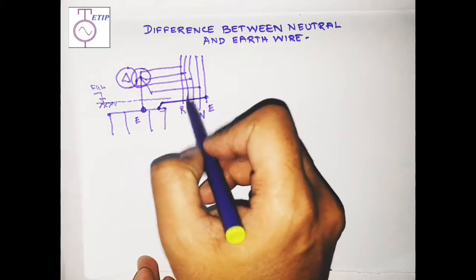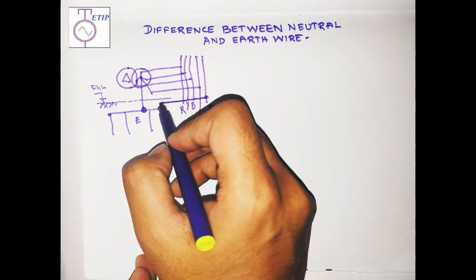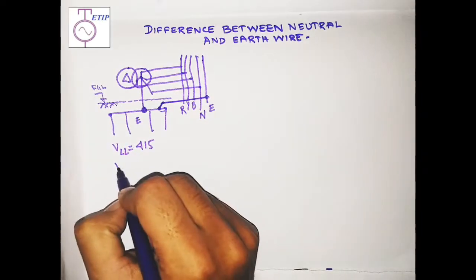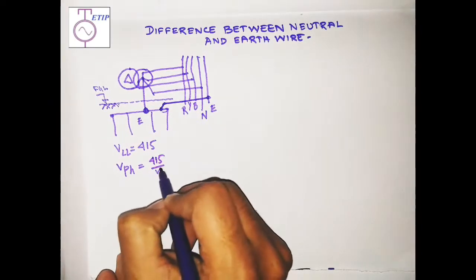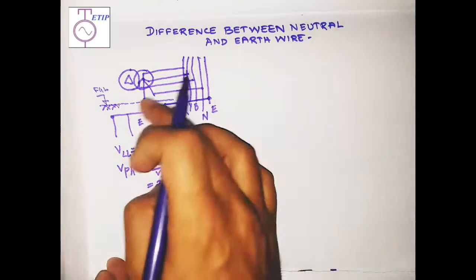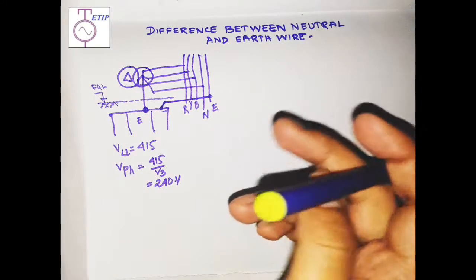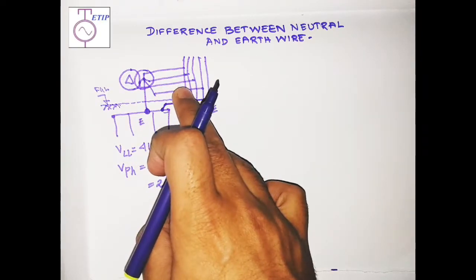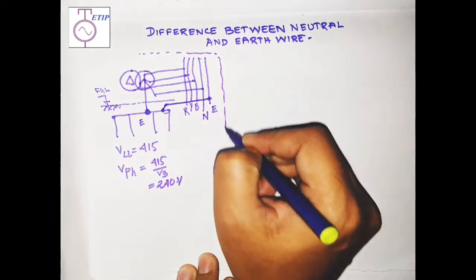From the transformer in the substation switchgear there is three phase, one neutral, and one earth. This neutral is only used in the 415 volt system to draw single phase supply. Line-to-line voltage is 415 volt; when drawing single phase we take line and neutral, giving the phase voltage of 415 divided by root 3, which is around 240 volt. For higher voltage levels like 11 kV or 6.6 kV, only three-phase line-to-line voltages are used.